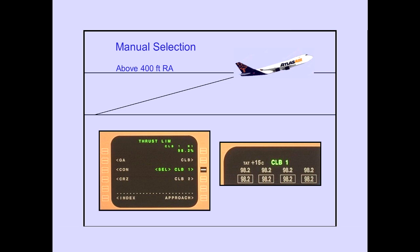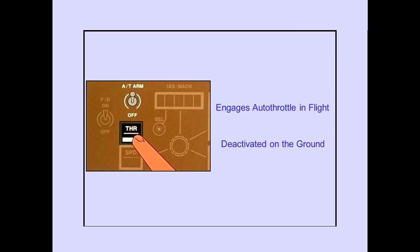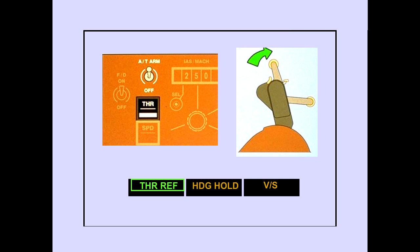Climb thrust can be manually selected above 400 feet radio altitude. The thrust levers retard toward the climb thrust limit, and the thrust mode display changes to climb. The thrust switch can also be used to engage the autothrottle in flight. The thrust switch is deactivated on the ground. When the thrust switch is pushed during flight, the thrust levers advance to the selected climb thrust limit. Thrust reference is displayed on the PFD.